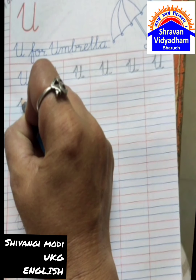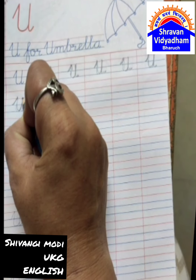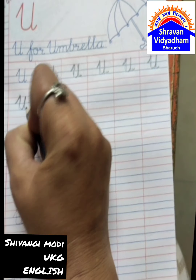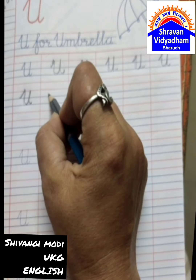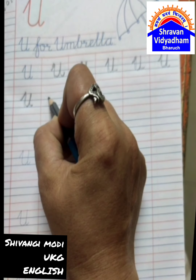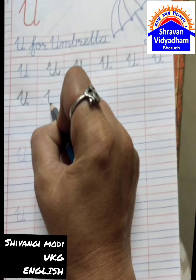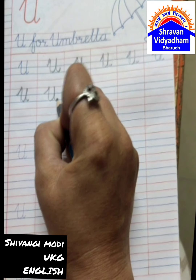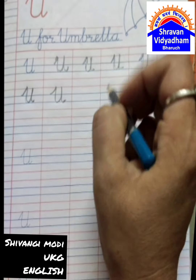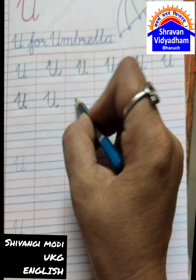Slanting line, half curve, then turn — U for Umbrella. Slanting line, half curve, then turn — U for Utensil.